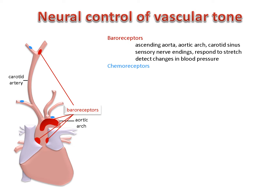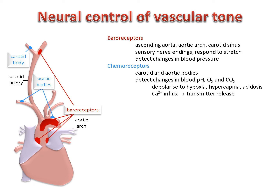Chemoreceptors respond to changes in the chemical composition of arterial blood. They are small clusters or bodies of cells known as glomus cells, located around the aortic arch — where they are called aortic bodies — or near the bifurcation of the carotid artery, where they are called the carotid body. The glomus cells depolarise in response to hypoxia, hypercapnia, and acidosis. The depolarisation evokes a rise in cytoplasmic calcium concentration, which releases neurotransmitters from the glomus cells onto the receptors of afferent nerve fibres.